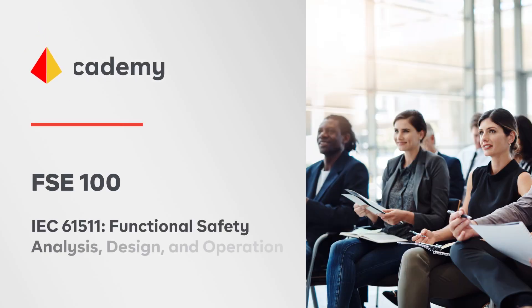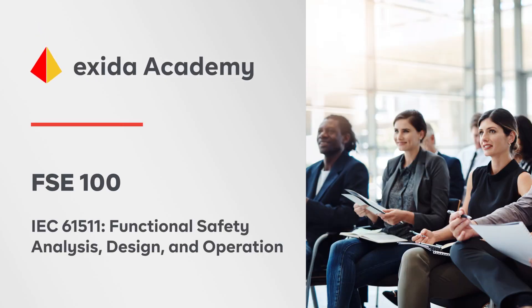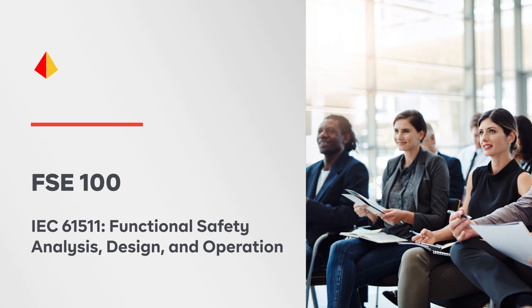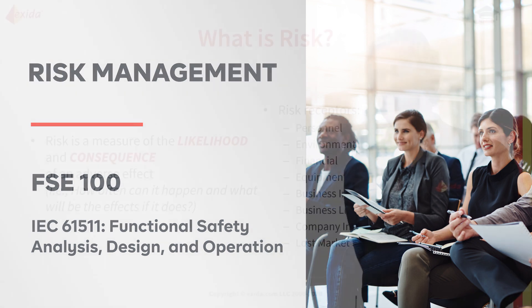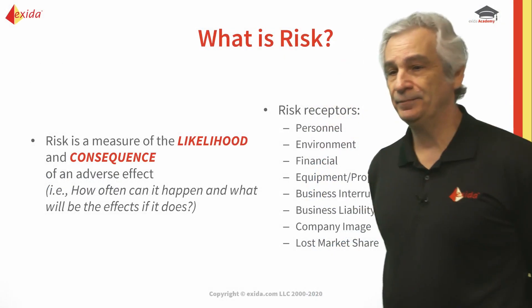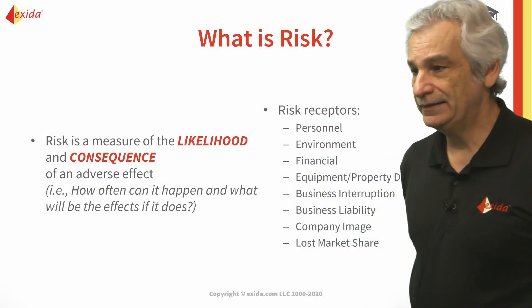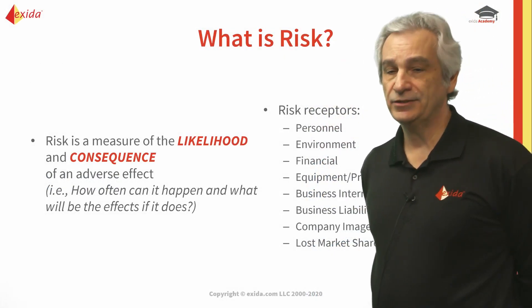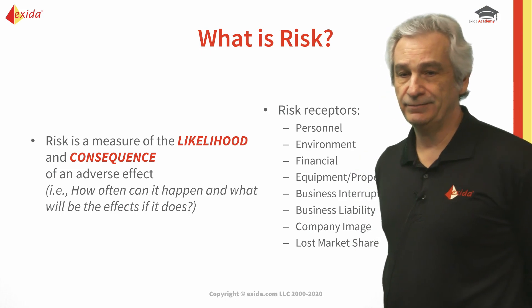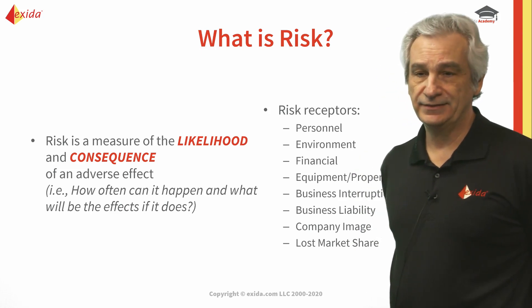What is risk? As we've mentioned already, Carnegie Mellon came up with this in the 70s and they said risk is a combination of the likelihood — how often is it going to happen — and a measure of the magnitude of the consequence — how bad is it going to be when it does.